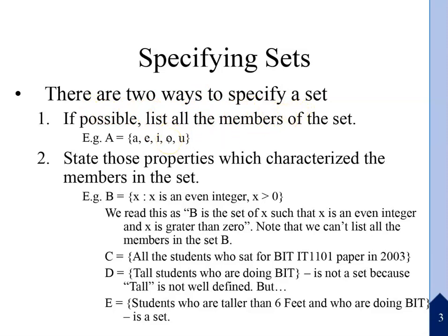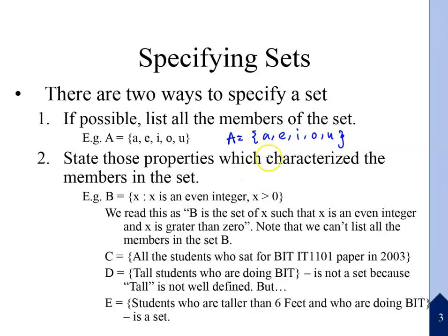We can show the set — if possible, list all the members of the set. If we list the members of the set, we use set notation with curly brackets. For example, the set of vowels: {a, e, i, o, u}. The second method is to state those properties which characterize the members in the set.